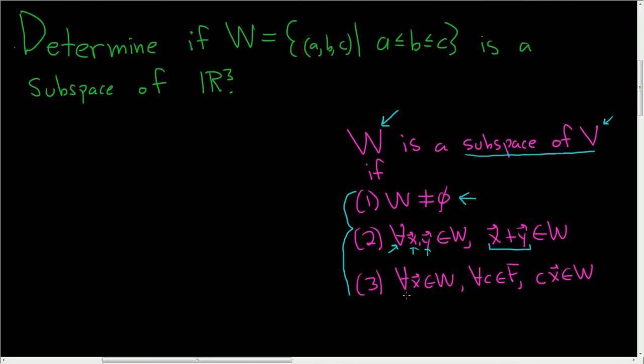And the third condition says that for every vector X in W and every scalar C in our field F, here our field is the real numbers, the vector CX is also in W. This is called closure under scalar multiplication. So if all three conditions are satisfied, then W is a subspace of V.